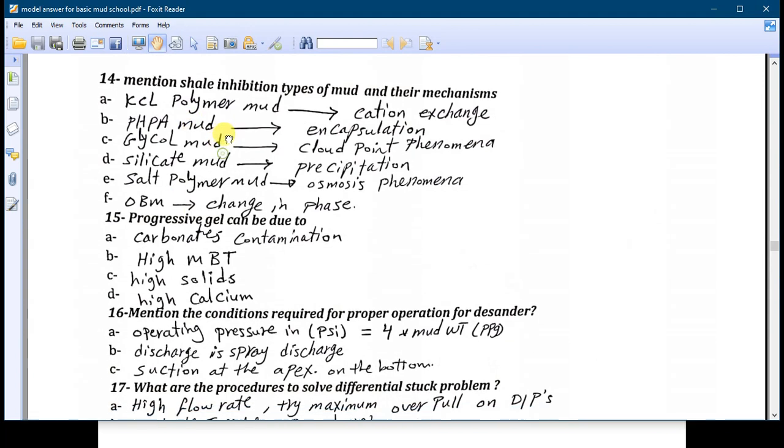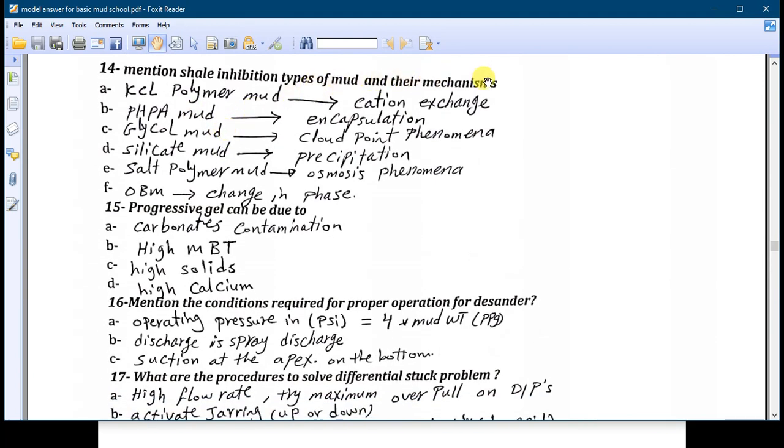Question fourteen: mention the shale inhibition types of the mud and their mechanism. Number A: the KCl polymer which is cation exchange. Number B: the PHPA which is encapsulation. Number C: cloud point phenomena. Number D: the silicate, precipitation type. Number E: the salt polymer mud which is osmosis phenomena. And the oil-based mud which is change in the wettability or change in the phases. There are other types but these are the main inhibition types. We have made already one complete video about this inhibition.